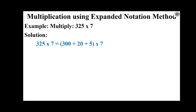2 is in the tens place — 2 tens are 20. 3 is in the hundreds place — 3 into 100, which is equal to 300. So 325 equals 300 plus 20 plus 5.